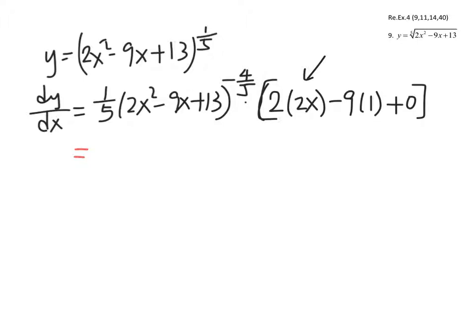So the final answer here is 1 over 5 times 4x minus 9, and then just copy the bracket term from before.